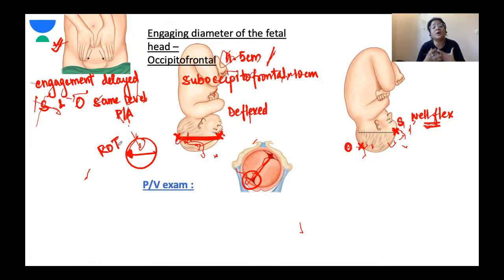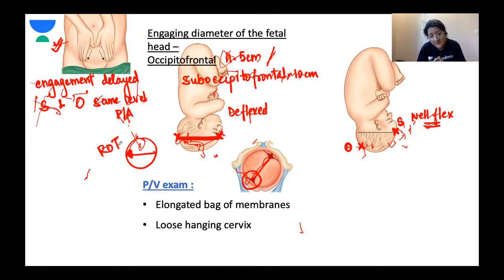Now let's talk about the mechanism of labour in ROP position. For the majority of women — 95% of cases — there will be a favourable outcome, meaning labour will progress. We noted that engagement is delayed and there is a long elongated bag of membranes which can rupture prematurely. There's a loose hanging cervix, and it will take time for the cervix to dilate. So labour will be slower compared to an occipito-anterior position.